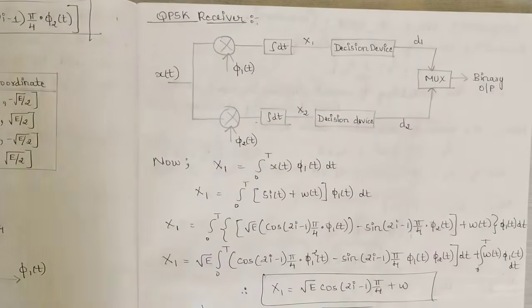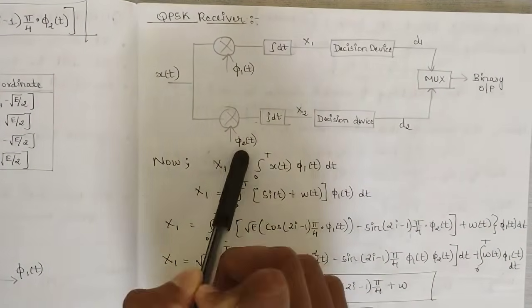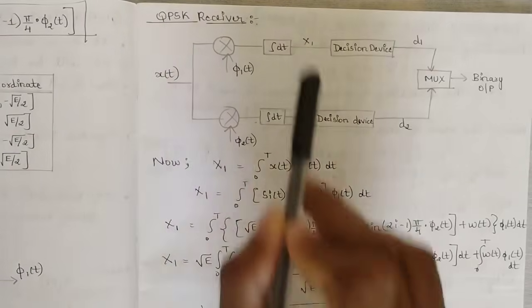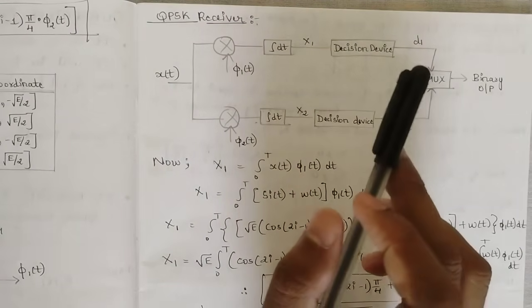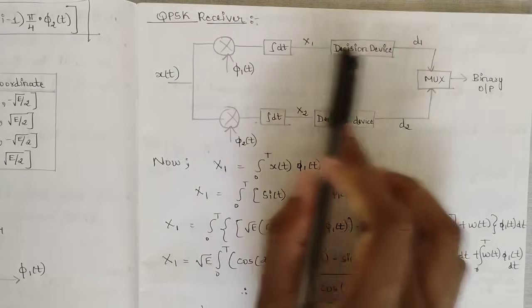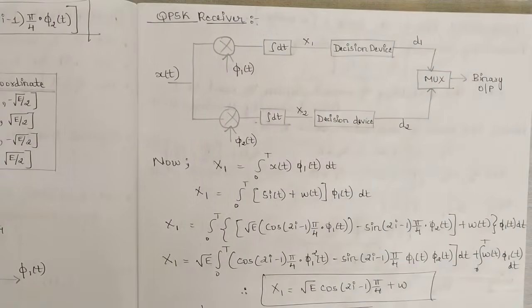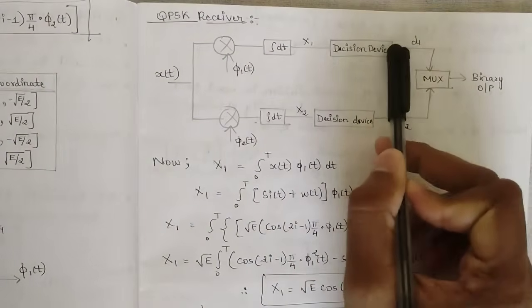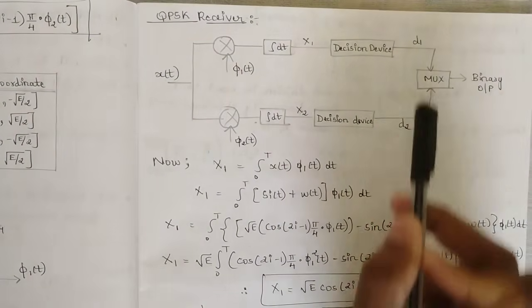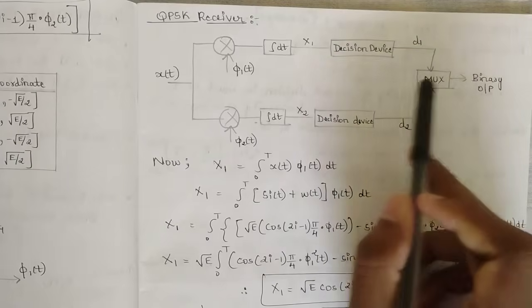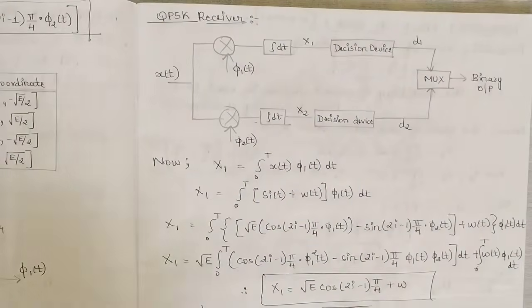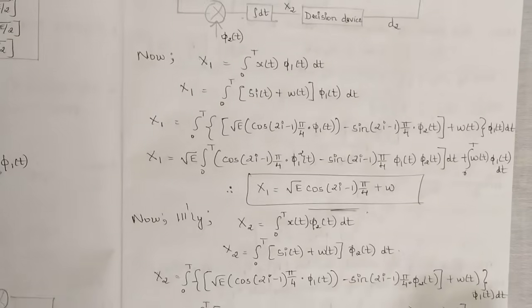For the QPSK receiver: the received signal x(t) is processed through two orthonormal basis functions and passed to an integrator. The outputs are two observation vectors x1 and x2, which are given to a decision device. The decision device predicts whether each bit is zero or one. The two output bits are then given to a multiplexer, which reconstructs the binary output.